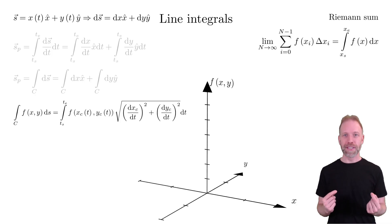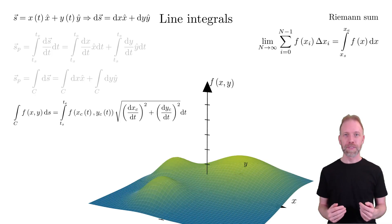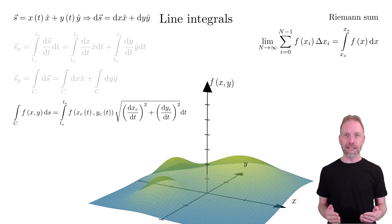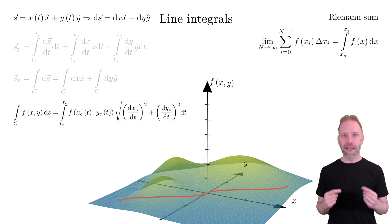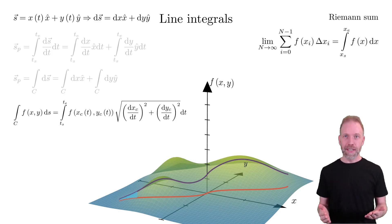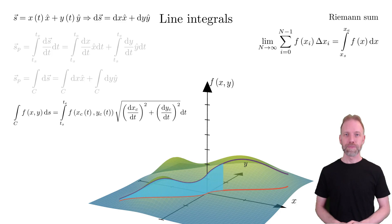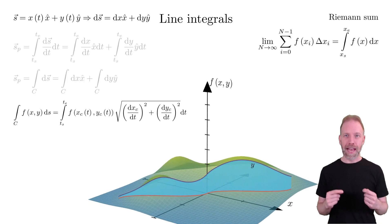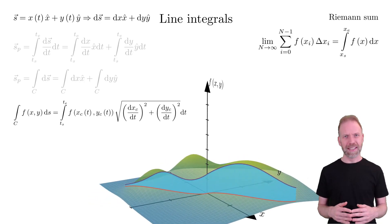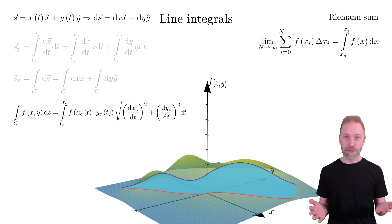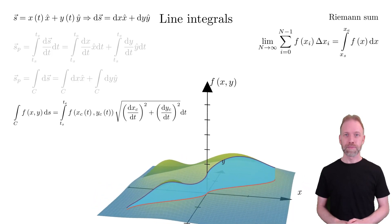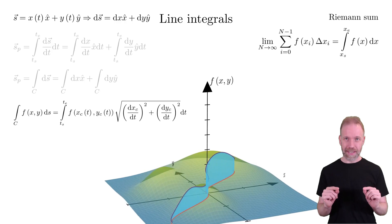Let us demonstrate this with a graphical example. Create a function f(x,y) and an integration path c. The line integral can now be represented by the area under this curve, similar to the one dimensional case. Note that we only care about the area under the curve — it does not matter in which direction the curve is pointing. The final result is a scalar value.